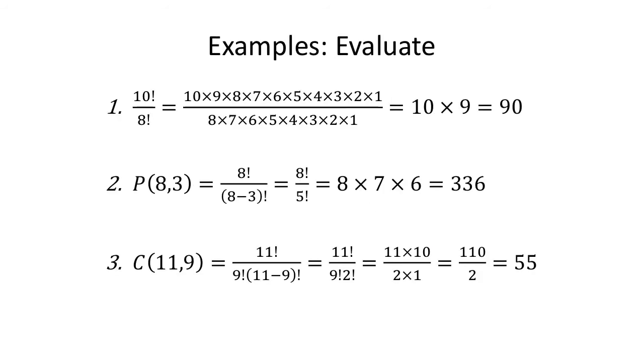Let's just do some examples, first of all, using factorial. 10 factorial over 8 factorial. If you wanted to, you could write all the numbers down. 10 multiplied by everything less than it down to 1. Same thing for 8, but really what is that? That 8 times 7 times 6 times 5 times 4 times 3 times 2 times 1, they cancel out. That's just 10 times 9, 90.